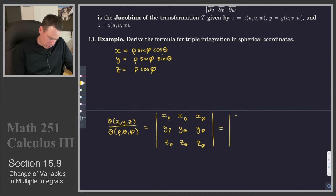What are our nine derivatives? The derivative of x with respect to rho is sine phi cos theta. The derivative with respect to theta is negative rho sine phi sine theta, and the derivative with respect to phi is rho cos phi cos theta.